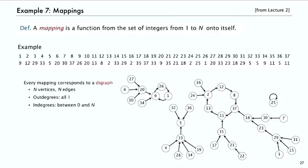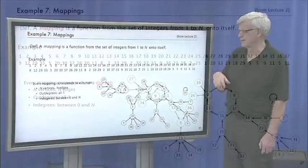And the in degree could be anything from zero to n. The mapping divides up into components and the components are either cycles or they're cycles of labeled trees.